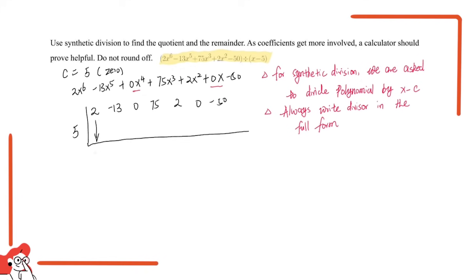We bring this number down, which is 2. Then what we do is multiplication between 5 and 2 and the rest of the numbers. So 5 times 2 equals 10. We put it right over here, below the first line. Then we do addition between the first line and the second line. So -13 + 10 equals -3.